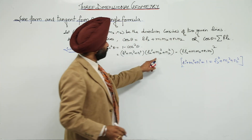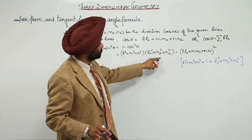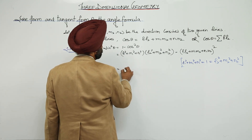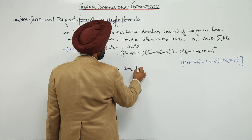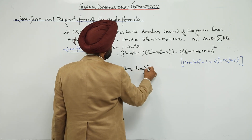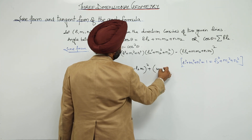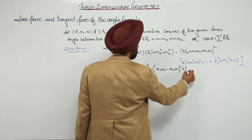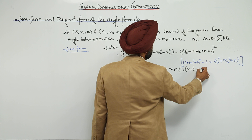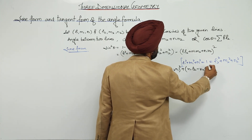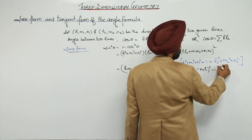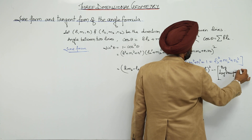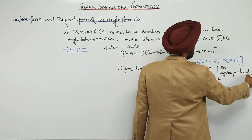Since L1² + M1² + N1² = 1 and L2² + M2² + N2² = 1, so 1 times 1 is 1. Further, we can expand this using Lagrange's identity as (L1M2 − L2M1)² + (M1N2 − M2N1)² + (N1L2 − N2L1)², which we just derived. This can be written as Σ(L1M2 − L2M1)².